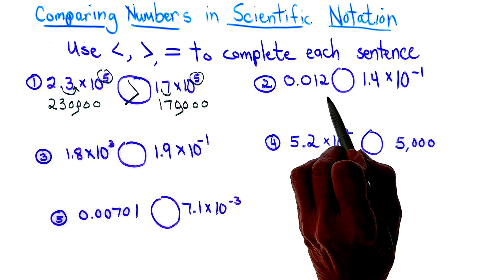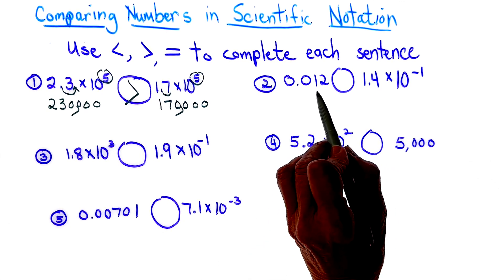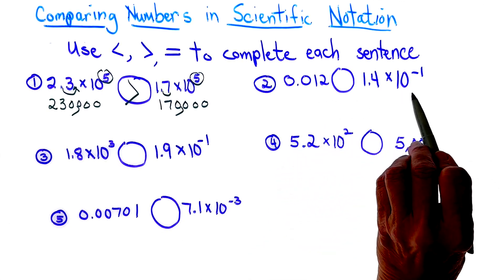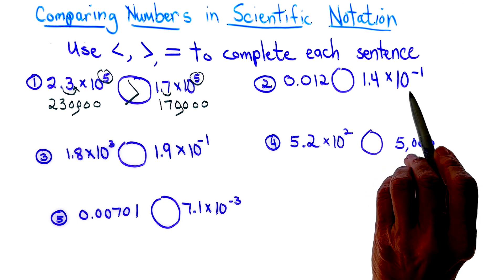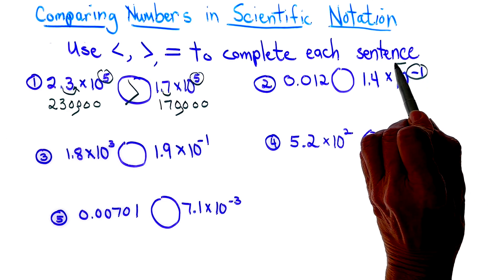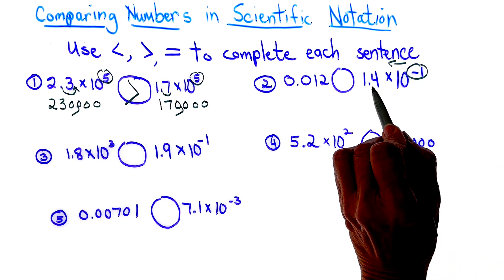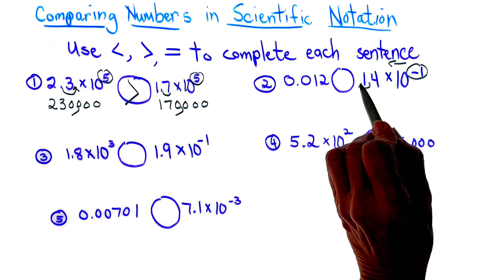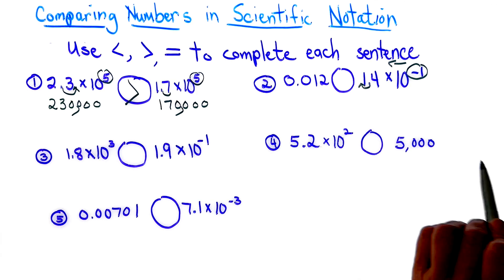So for the second one, this is not in scientific notation, but we are now going to have to change the 1.4 times 10 to the negative one. Well, when it's a negative number, remember, we move our decimal point to the left. So my new decimal point is going to be there.